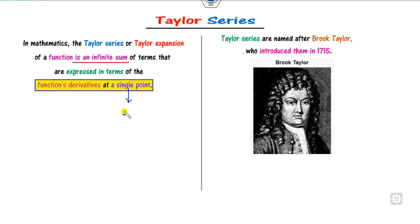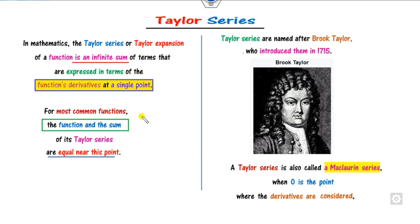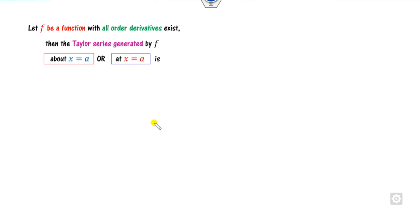If you consider the single point as the origin — that is, if the single point is reduced to x equal to 0 — then we call it the Maclaurin series. In that case, x = 0 is the only point where the derivatives are considered. For most functions, the function value and the sum of the Taylor series are nearly equal near this point. If all order derivatives of f exist at the point a, then you can define the Taylor series.